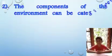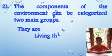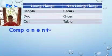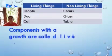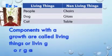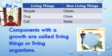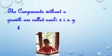The components of the environment can be classified into two main groups: living things and non-living things. Examples of living things are people, dogs, and cats. Non-living things include chairs, glass, and tables. The components with life are called living things or living organisms. The components without life are called non-living things.